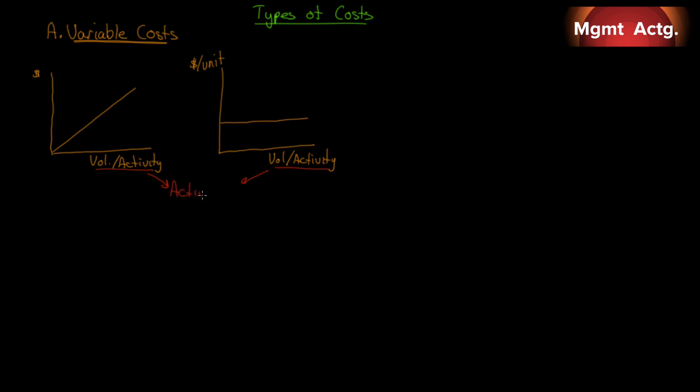This down at the bottom, the volume or activity, we call that the activity base. This is the driver that causes our variable costs. So if we're talking about gasoline, our activity base is kilometers driven. If we're talking about wages payable, our activity base is hours worked. Some popular ones are units made, direct labor hours, machine hours. Sometimes you have a very capital intensive process where we use more equipment than labor.